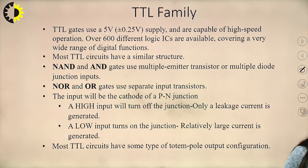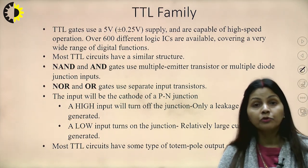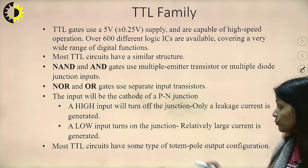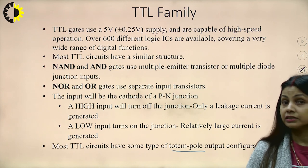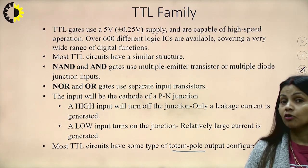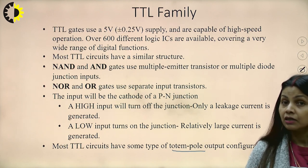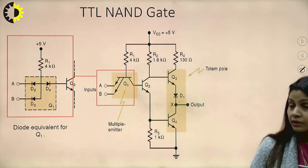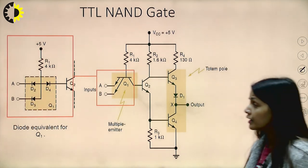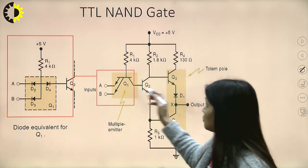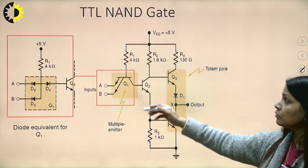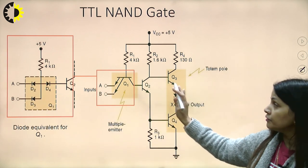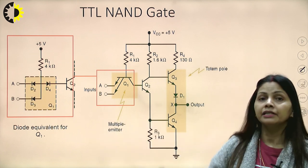Most TTL circuits have a totem pole output configuration — two transistors are used where if one is on, the other is off, and vice versa. NOR and OR gates use separate input transistors. The input and output depend on the cathode of a PN junction. To analyze any TTL circuit, we must see which diodes are on or off and whether transistors are in on or off state. The circuit uses transistors Q1, Q2, Q3, Q4 with multiple inputs, and these circuits will be understood in detail in the next video lecture.